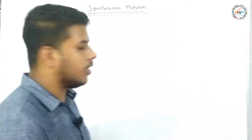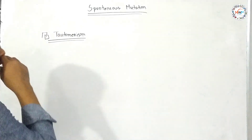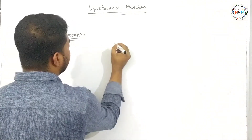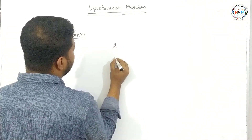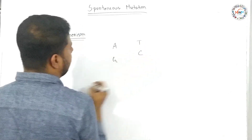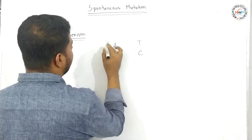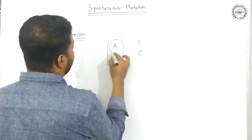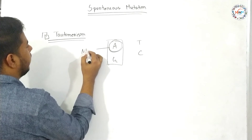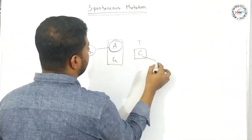I am going to tell you that the nitrogenous bases are called adenine, thymine, and cytosine. The adenine is the amino content. The cytosine is the amino form.